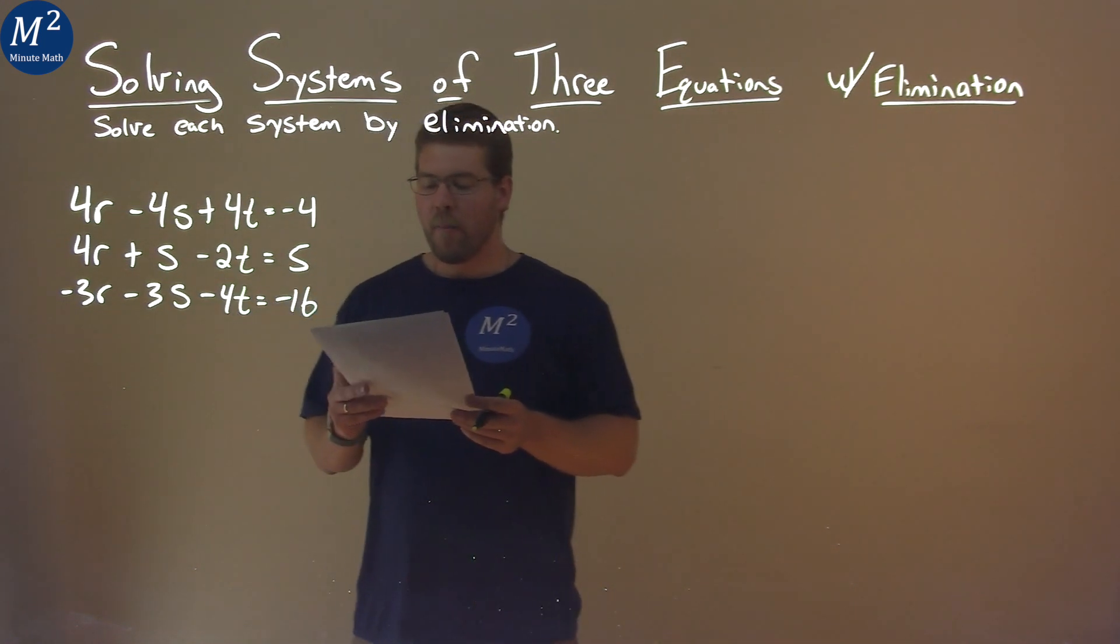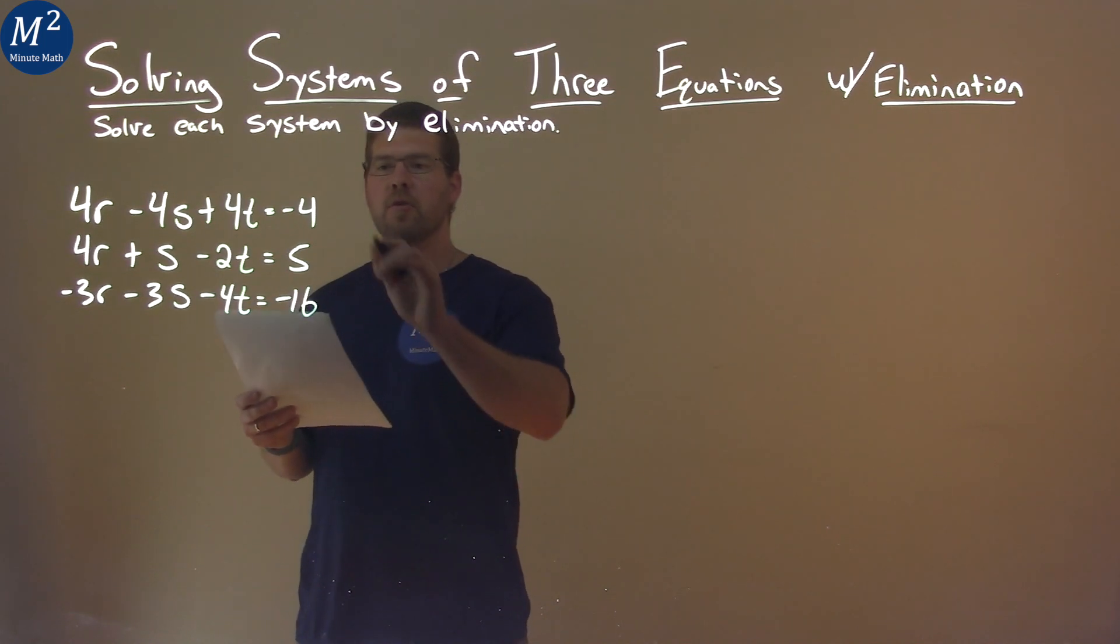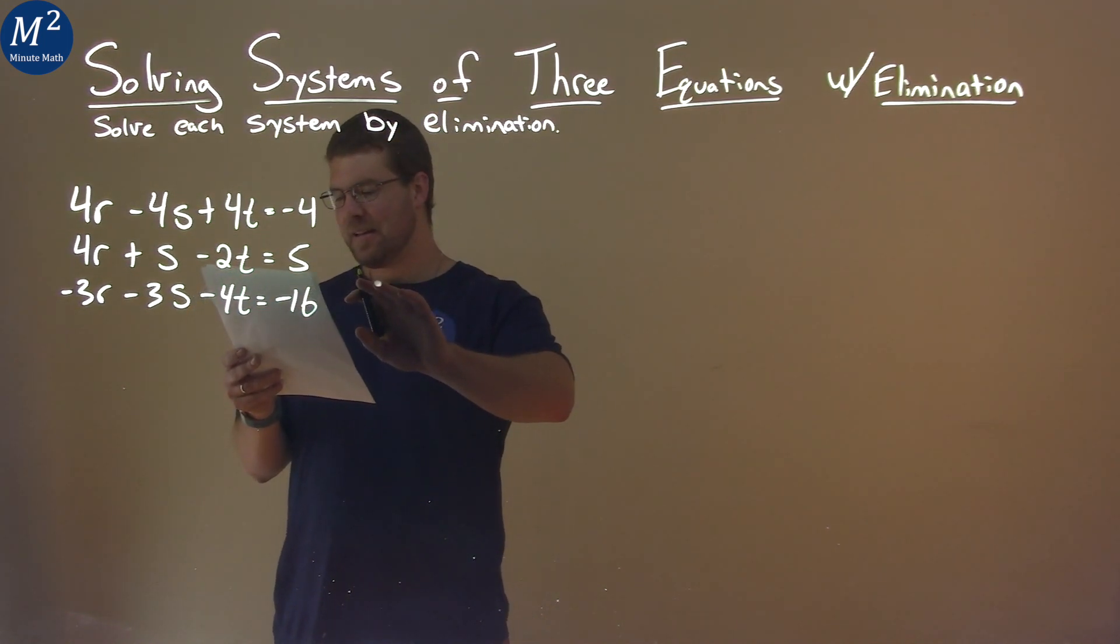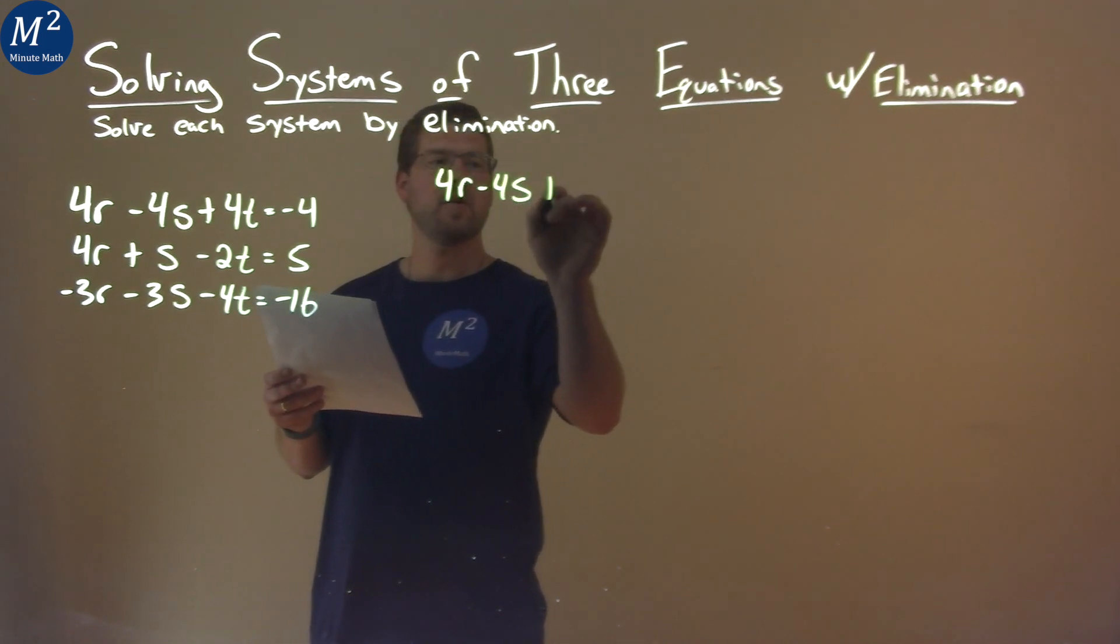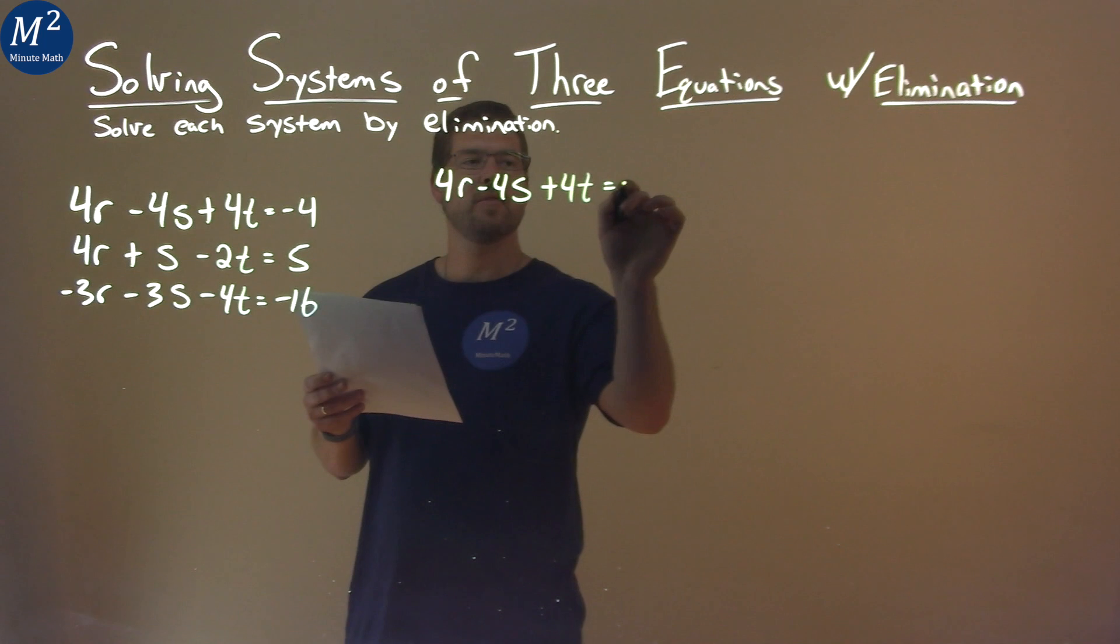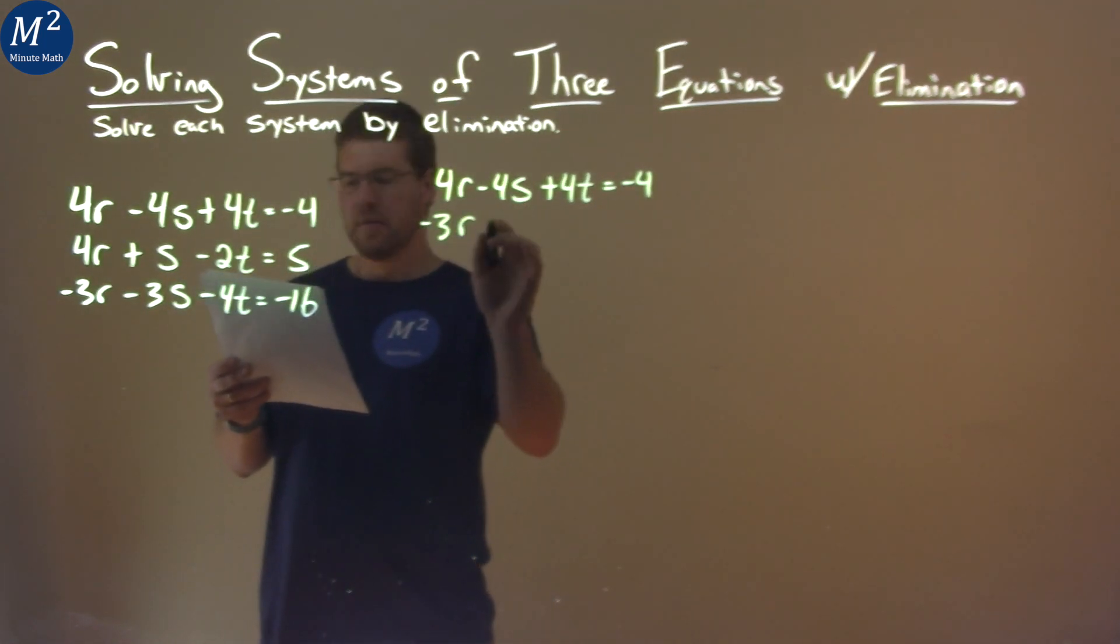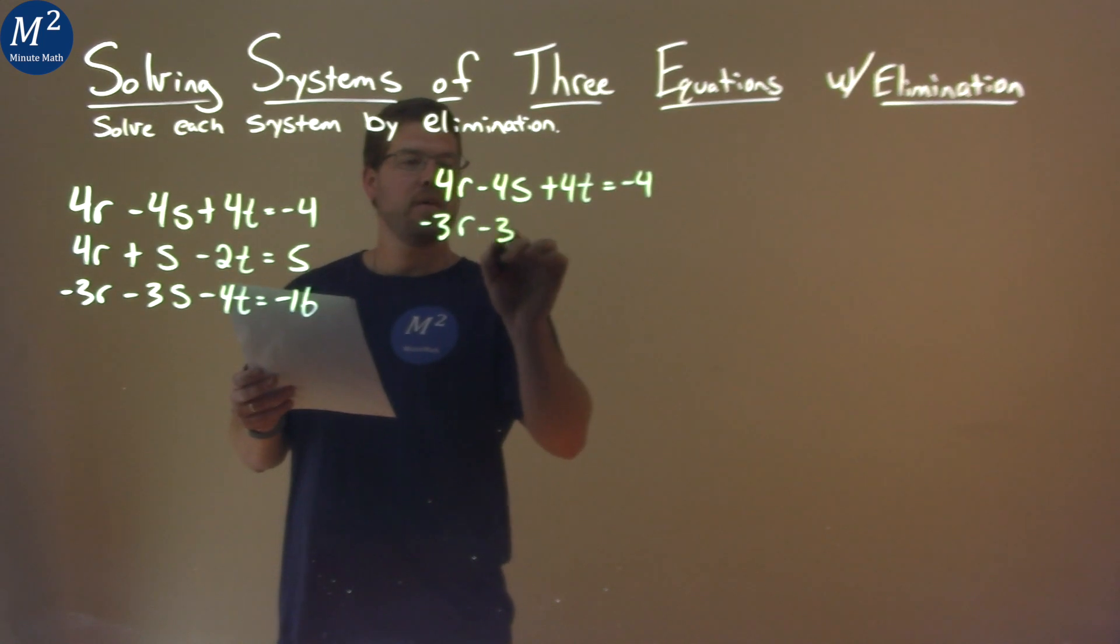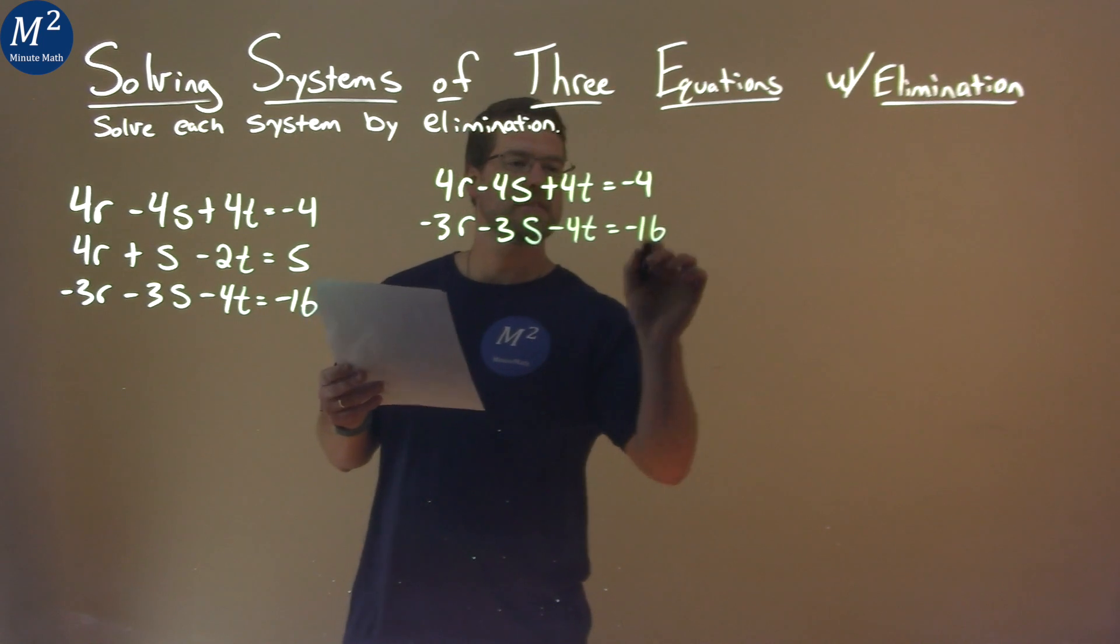My first goal is to try to find two equations that when I add them together will eliminate a variable. Let's look at the first equation and the last equation. Let's rewrite that here. 4r minus 4s plus 4t equals negative 4. The last equation, negative 3r minus 3s minus 4t equals negative 16.